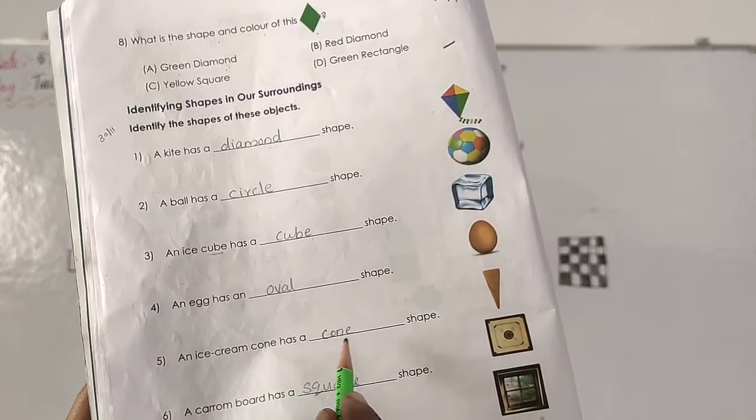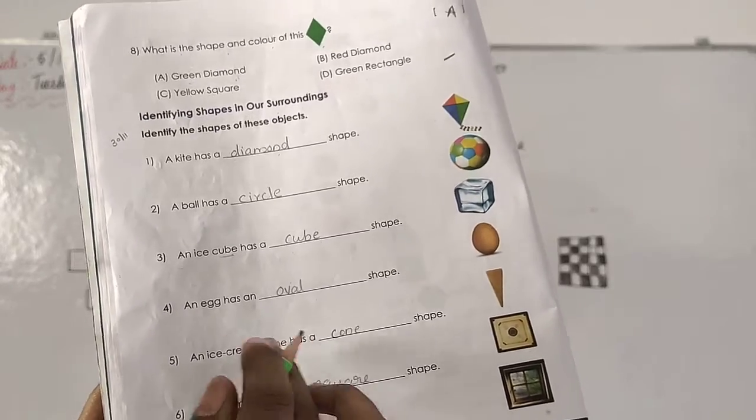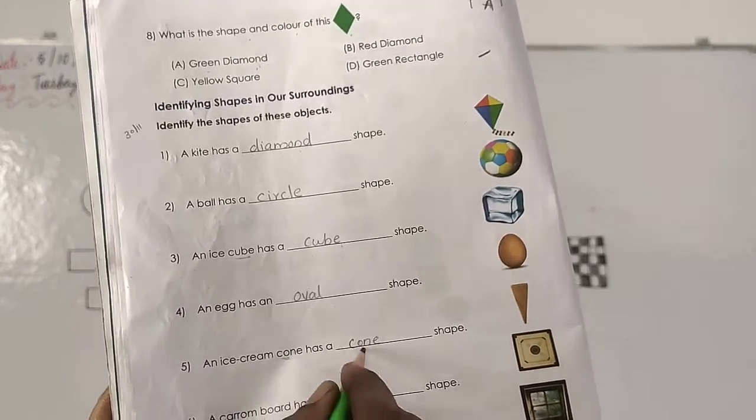An ice cream corn has a dash shape. Ice cream corn. See corn shape here. I have answer is corn. C-O-N-D.